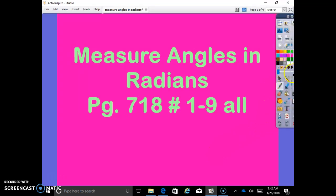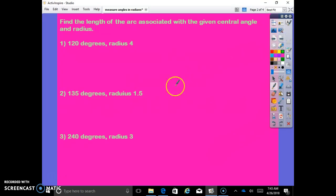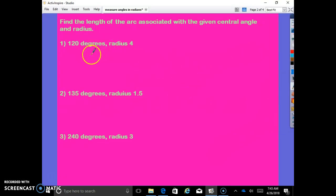We're going to go over the problems on page 718, numbers 1 through 9, all. The directions say find the length of the arc associated with a given central angle and radius. So there are two ways that you can do this. One of the ways is the arc length formula. The arc length formula is arc length equals theta times radius.